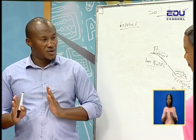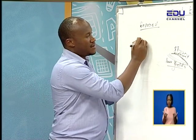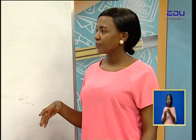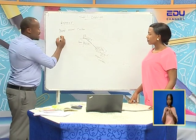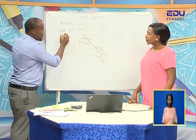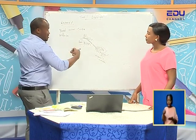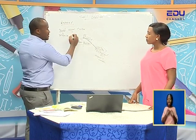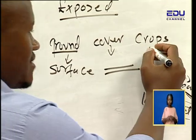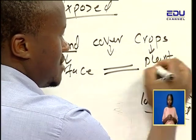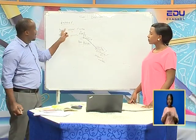Now, causes. One cause: cultivation on slopey land — that is one we have already talked about. The next one: lack of ground cover crops. What are ground cover crops? We have the word 'ground' — basically the surface we are on. Then 'cover' — like protection, putting something on top of something. Then 'crops' — basically a plant. So ground cover crops are the crops that we grow covering the earth or covering the soil. These crops grow horizontally, spreading out across the surface.